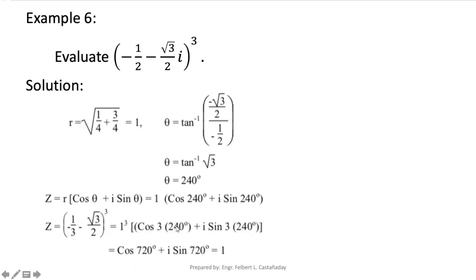Since this is raised to the power of 3, the modulus 1 raised to 3 is still 1. The argument theta is multiplied by 3: cosine(3 × 240°) equals cosine 720°, and similarly for the imaginary part, i sine 720°. Using your calculator, sine 720° equals 0 and cosine 720° equals positive 1. So the answer is the real number 1.